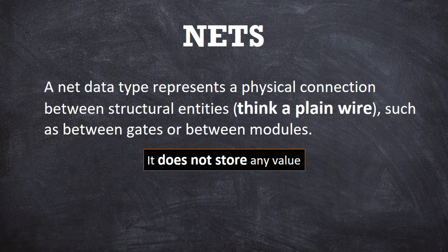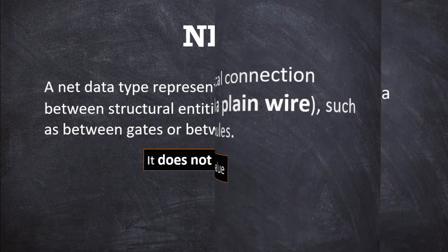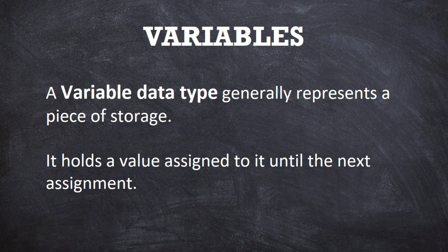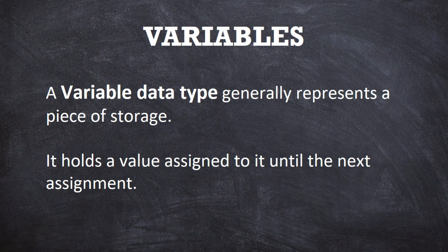For the nets, it won't store any value — the values are passed. If it is stored in any value, it will represent a piece of storage and the value will be preserved. This can be done in a variable data type but not in a net data type. The net data type will not store the value; it will just pass the value.